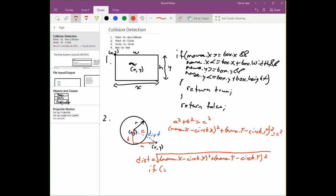So if the distance is less than or equal to the radius, we have a collision. So we return true. Otherwise, we return false.